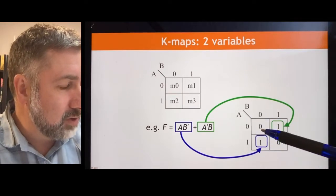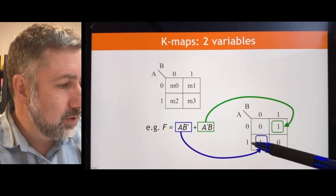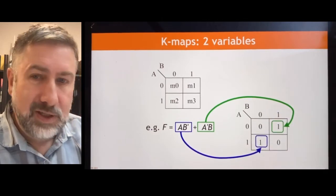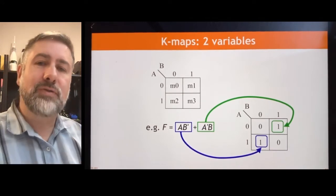And then this, in fact, is the truth table. We can say 0, 0 gives us a 0. 0, 1 is a 1. 1, 0 is a 1. And 1, 1 is a 0. So that's a two-variable map. And it's a good sort of introduction.